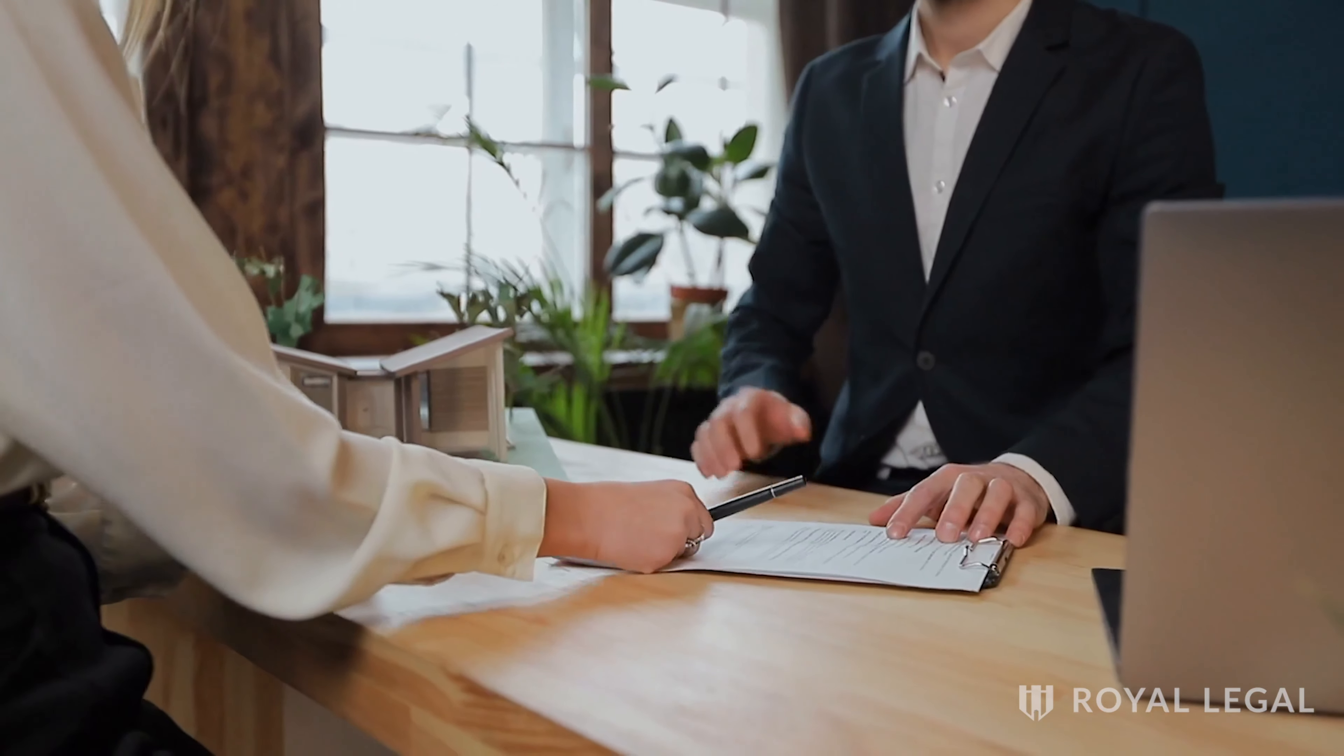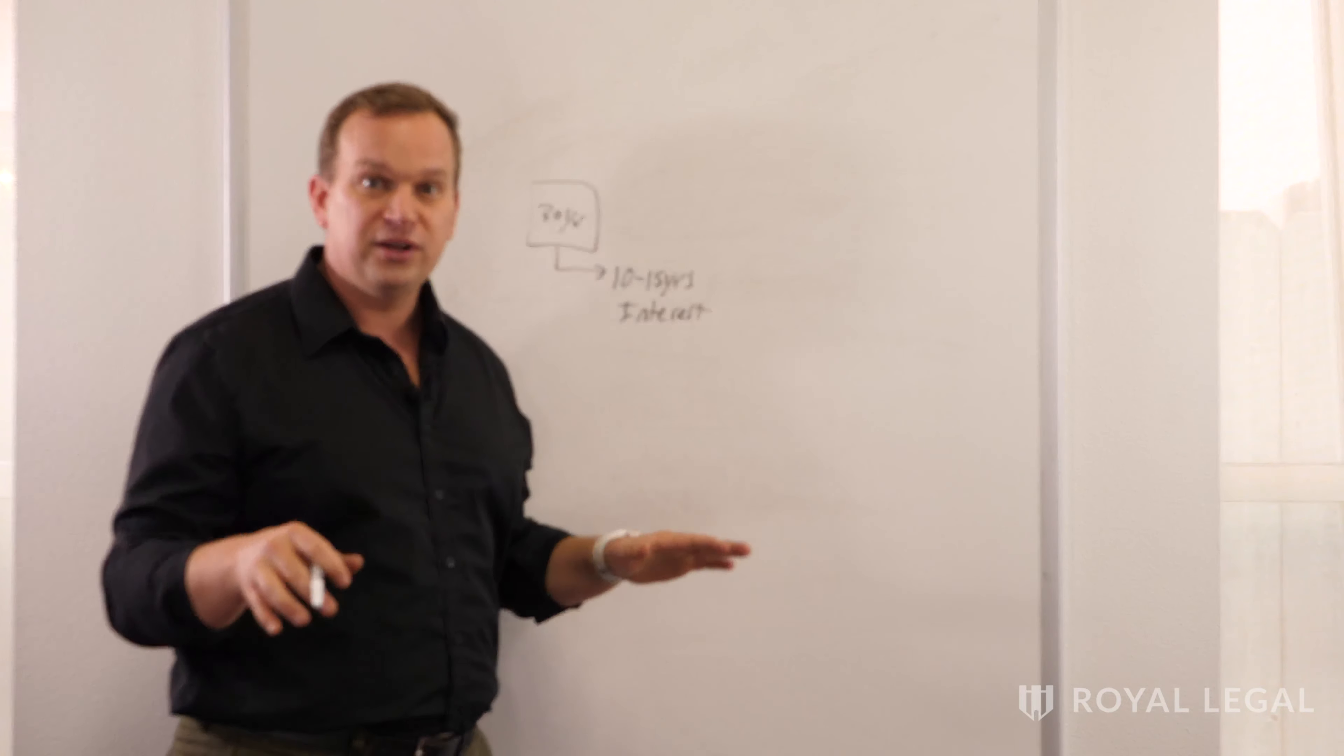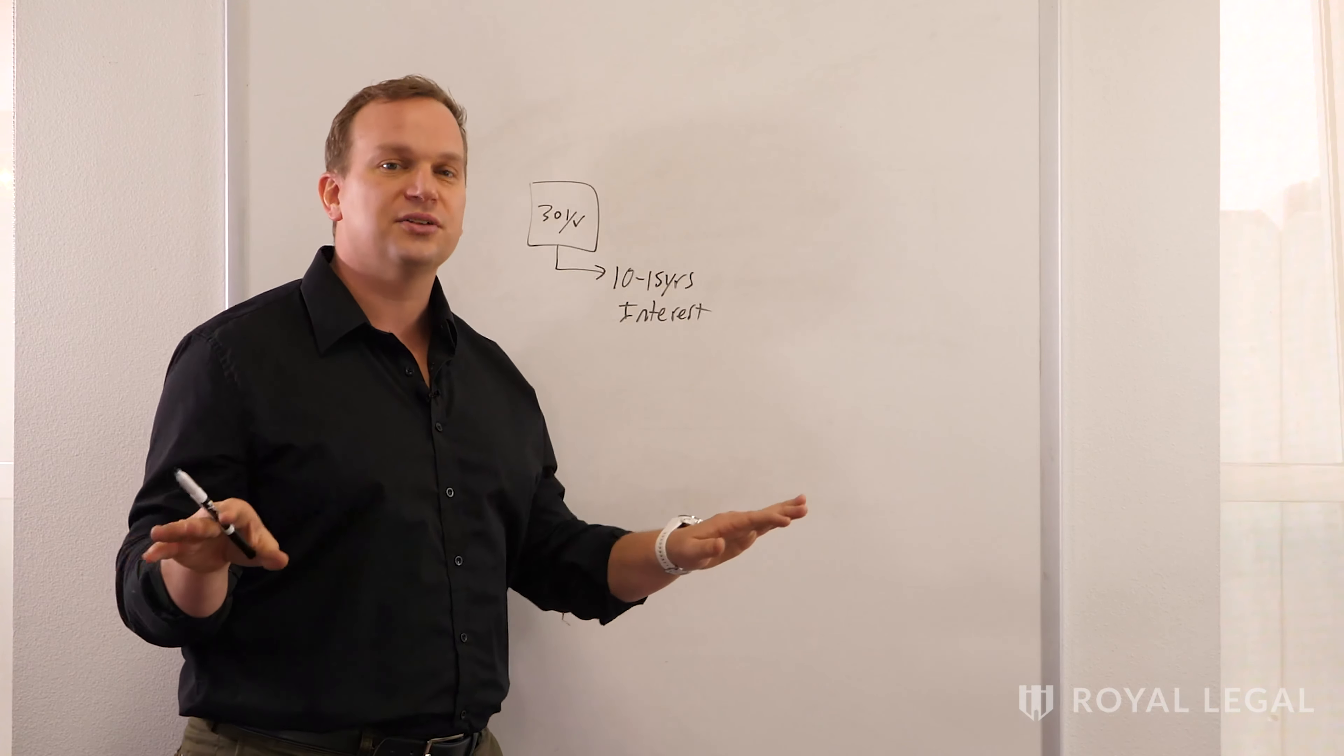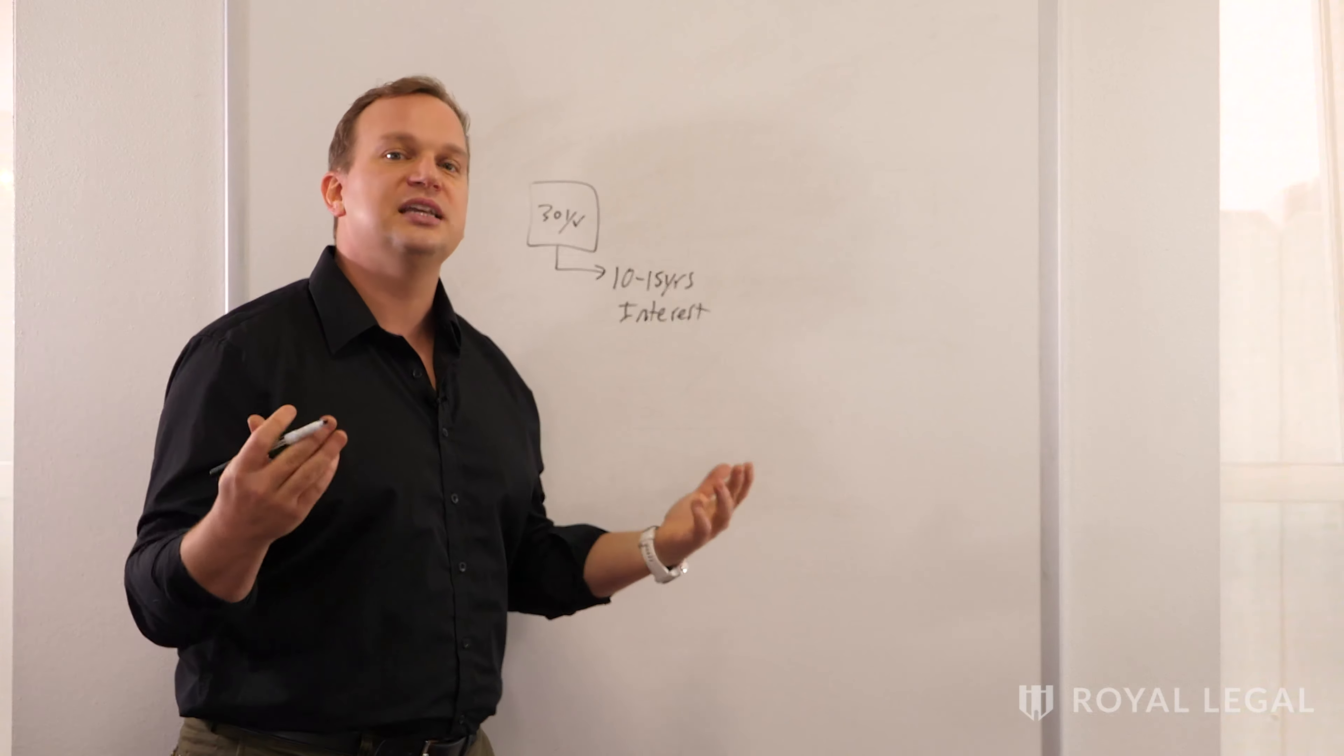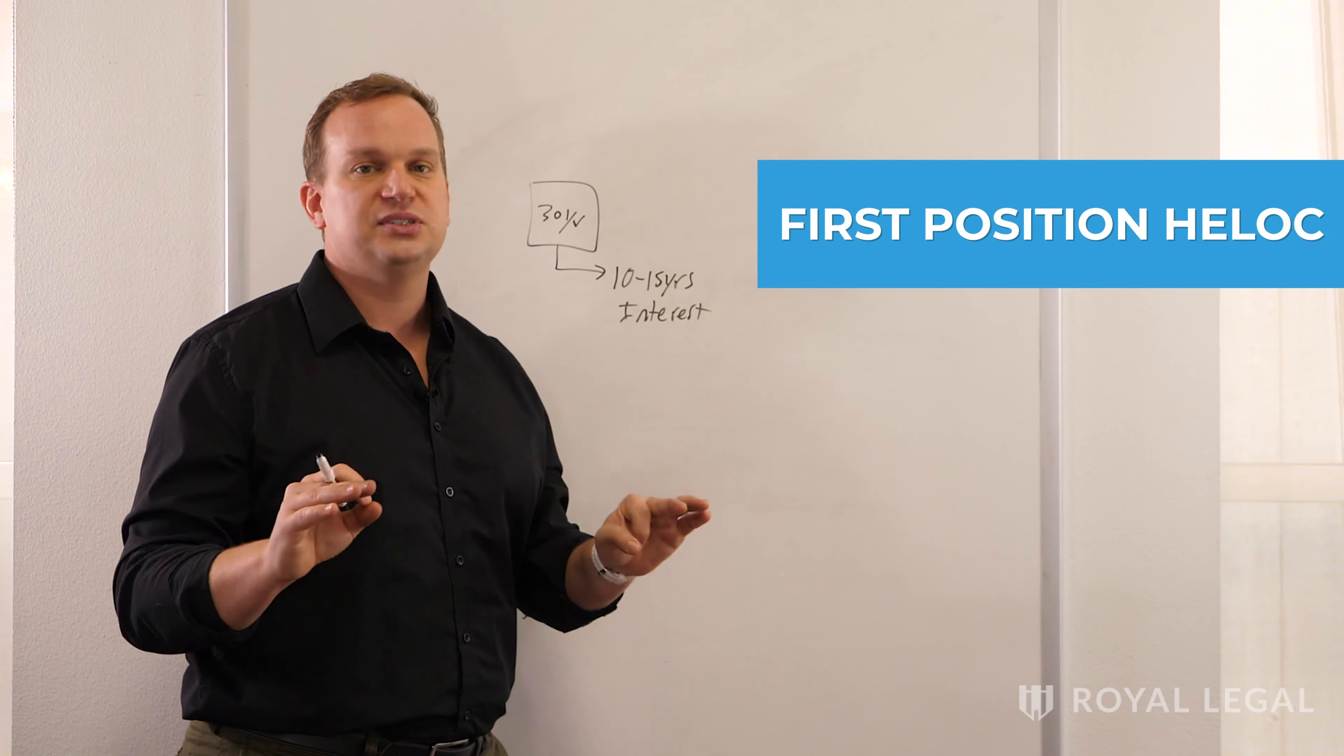So basically, you buy the bank a house first and then you get to buy your own house after that. Now, there's a much better way to do this that's much smarter and it's accepted in Australia, Europe. It's actually the standard in the rest of the world. We just don't see it very commonly used here in the United States and it's called the first position HELOC.